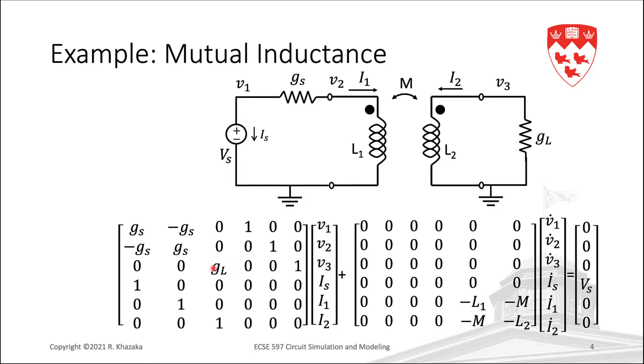For the voltage source, we need to add a new variable, Is, and a new row, a new column to the MNA matrix. In this case, it is column 4, which is the one multiplying the new variable, Is, and row 4, which contains the model equation for the voltage source.